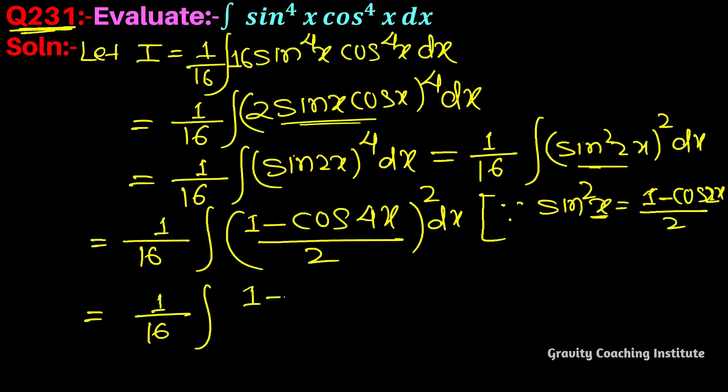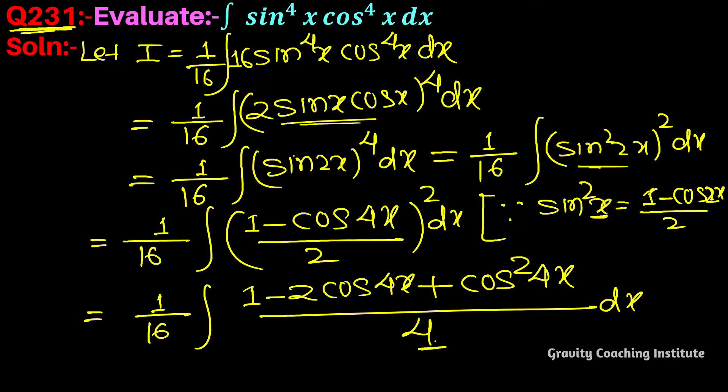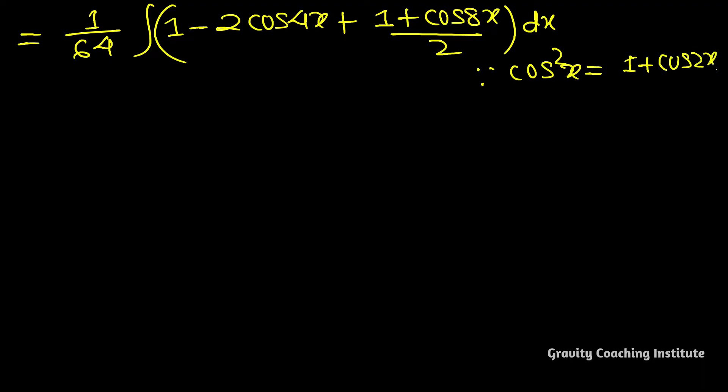Squaring this gives 1 minus 2 cos 4x plus cos square 4x upon, and 2 squared is 4. Taking 1 by 4 outside, this 16 becomes 64, so 1 by 64 integration. 1 minus 2 cos 4x plus, and for cos square 4x we can take 1 plus cos 8x by 2.